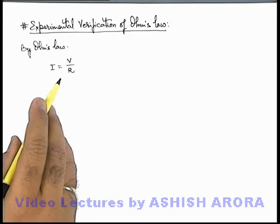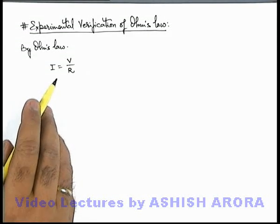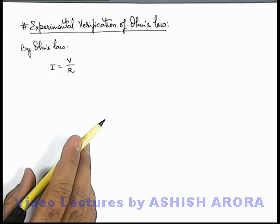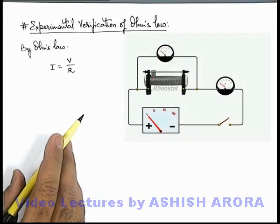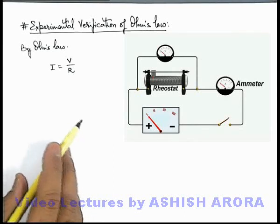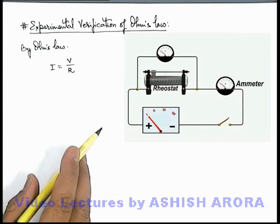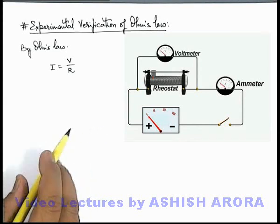Just to verify this experimentally, let's have a look at the circuit diagram which we can see here in the figure. You can see there is a resistance connected with an ammeter to measure the current, and a potential difference across it can be measured via voltmeter.